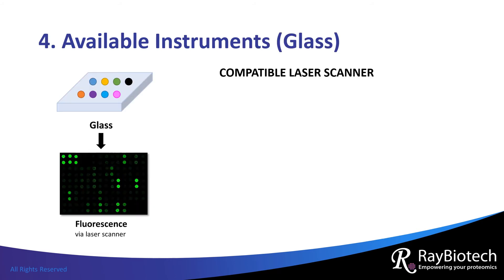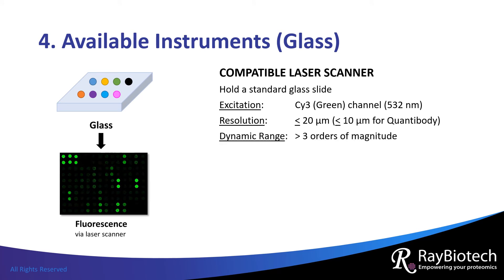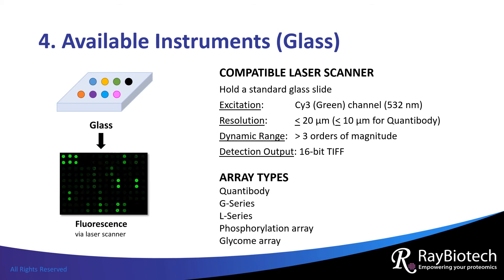If you want to process the arrays yourself, which instruments can you access? For glass slides, you will need a compatible laser scanner. The scanner should be able to hold a standard glass slide, detect Cy3 fluorescence, have a resolution of at least 20 microns, have a dynamic range of at least three orders of magnitude, and create a TIFF image of the scan. Antibody arrays with a glass substrate include Quantibody, G series, L series, phosphorylation array, and glycom array.